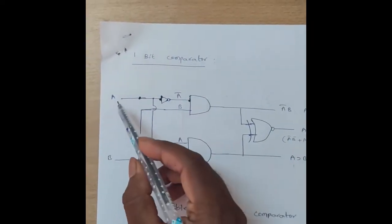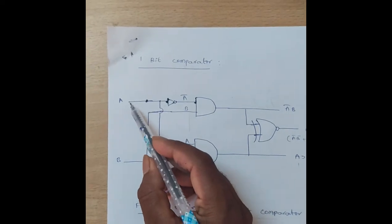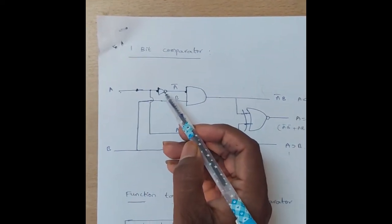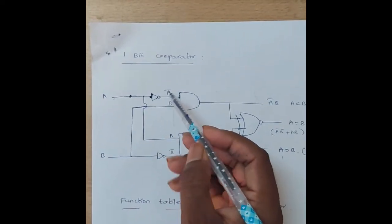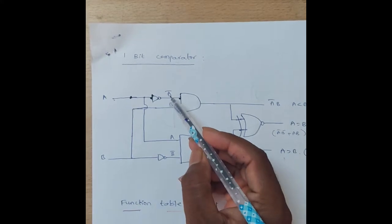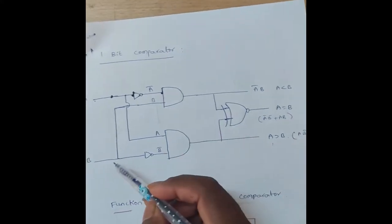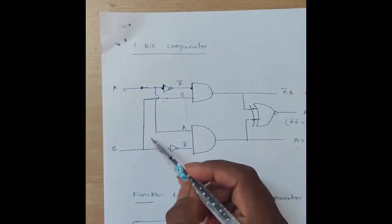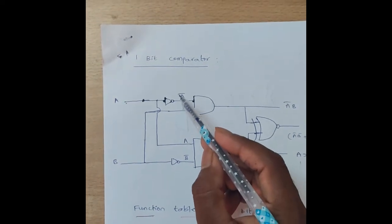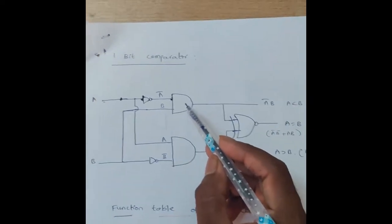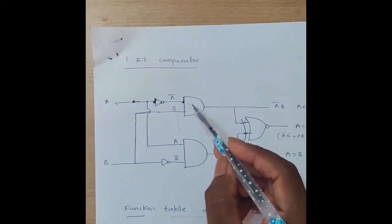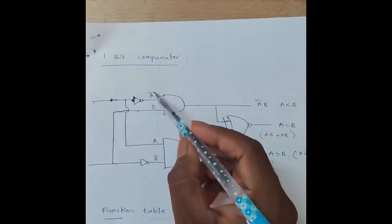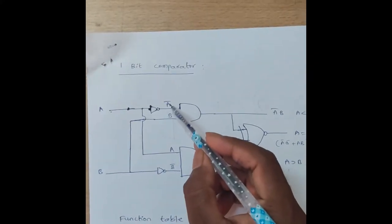For the A less than B condition, A is given to a NOT gate and the output of the NOT gate is A-bar. B is the second input to the AND gate, and the output of the AND gate is A-bar·B.